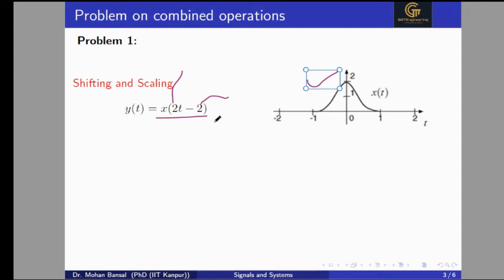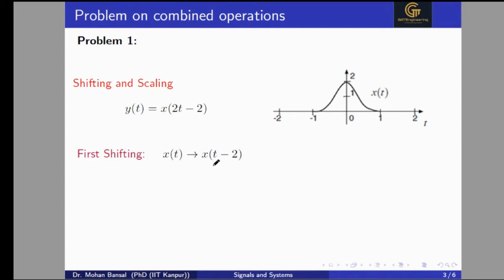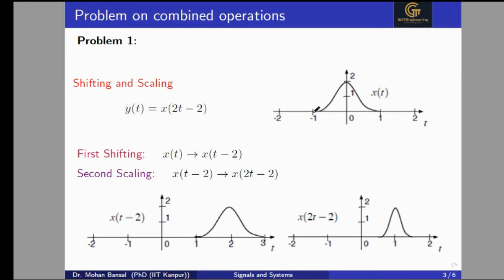According to the precedence rule, we will apply time shifting first. This is the given signal x. We apply the shifting operation — since the signal is represented as x(t - 2), the signal will be shifted to the right side by two. Initially the signal starts from minus one and ends at one; beyond that range the signal is zero. So this signal will be shifted to the right side by time two.